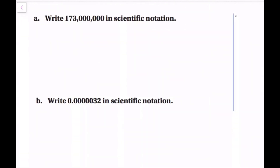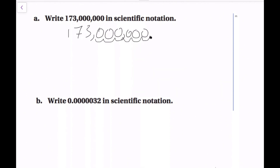We're going to work on the first two examples. Write 173 million in scientific notation. The first step is to locate where the decimal is. If there's no decimal written, remember it's always written next to your last digit. Then figure out how many times you need to move it to get a number between 1 and 10, or just one digit before the decimal. So we move it 1, 2, 3, 4, 5, 6, 7, and 8 times.